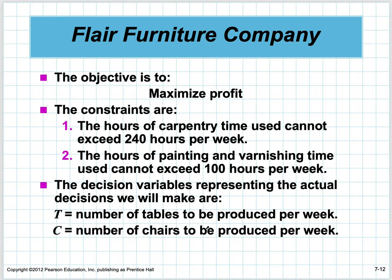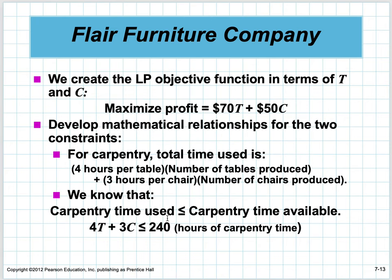The objective is to maximize profit. You'd probably want to make as many tables as possible, but they take more hours of carpentry and painting, which may limit that — you might have to make a mix of both. The objective is to maximize profit, the constraints are hours of carpentry cannot exceed 240, and hours of painting and varnishing cannot exceed 100. Variables T and C are the number of tables and chairs produced per week.